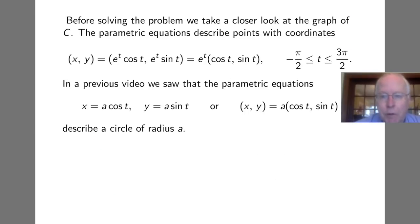Before we solve this problem, let's take a closer look at the graph of C. The parametric equations for C describe points with coordinates (e^t cos t, e^t sin t). We'll often write this as e^t times the ordered pair (cos t, sin t). This notation means we can multiply the e^t inside, multiplying both the x and y coordinates by e^t. And t is between -π/2 and 3π/2.